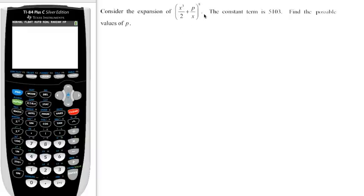In this example, we have a binomial expansion. We have an x cubed term as the first term and p over x as the second term. And we're given some information about a constant, which means all the x's cancel. So we're going to find the possible values of p. Now, the constant is going to be 5103.